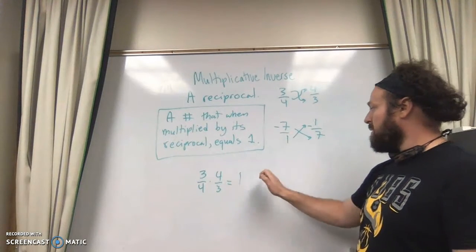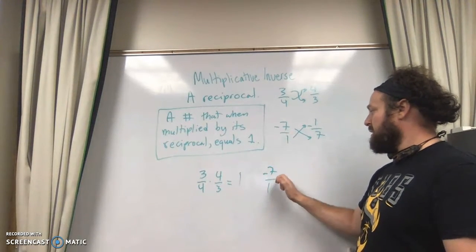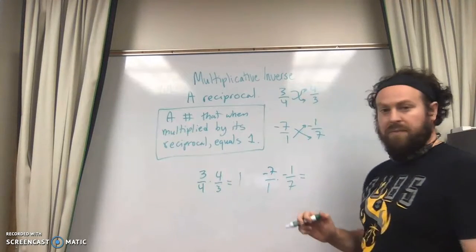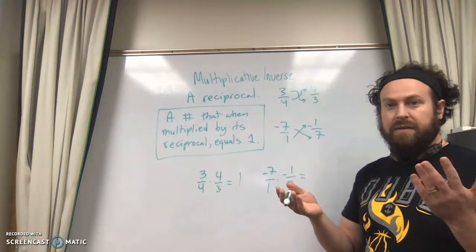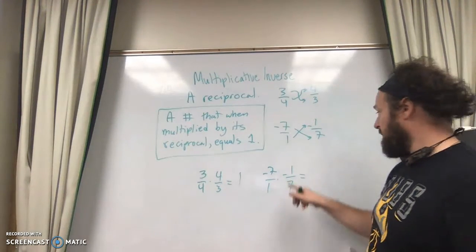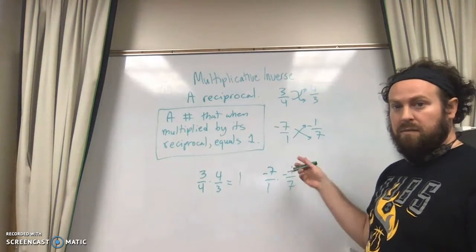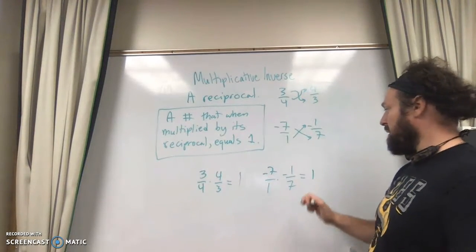So negative 7 over 1 times negative 1 over 7. Well, we already know a negative times a negative is a positive, so that's great. And then 7 over 7 is 1, and 1 over 1 is 1. So same thing, equals 1.